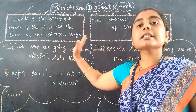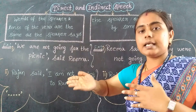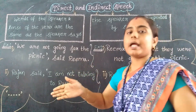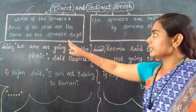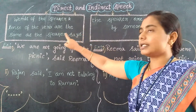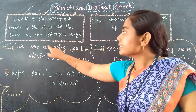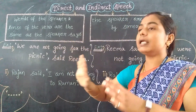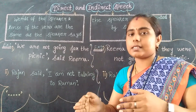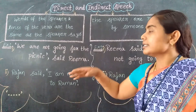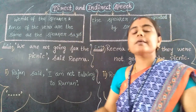First, what is direct speech? By seeing the word itself you can understand — directly which is said directly. Direct information, direct process, direct dealing. The definition: the words of the speaker — that is the actual words of the speaker — and the tense of the verb are the same as what the speaker says.